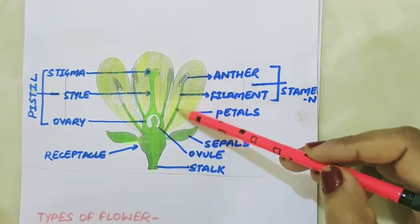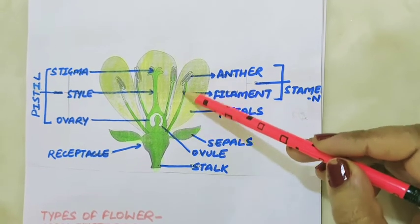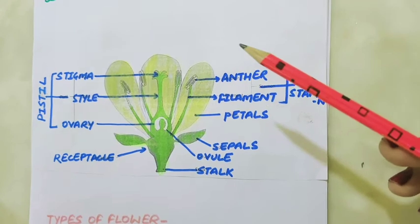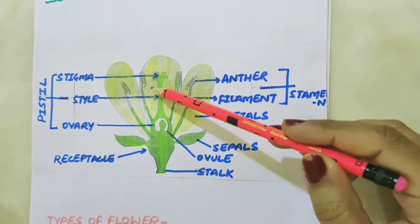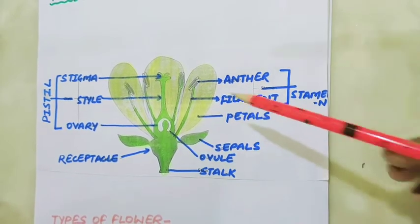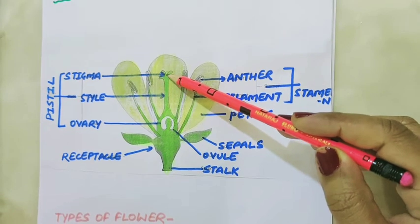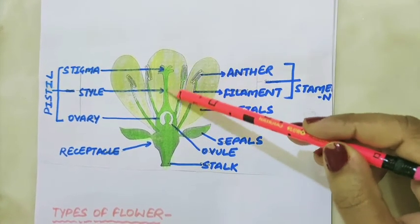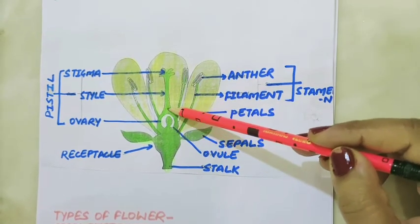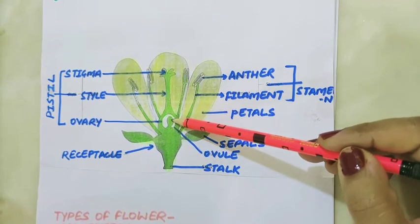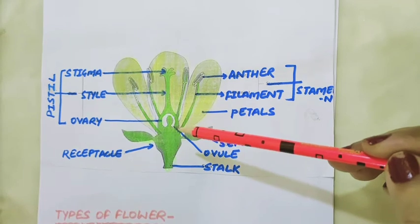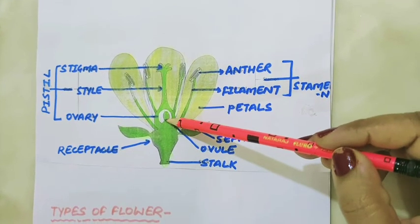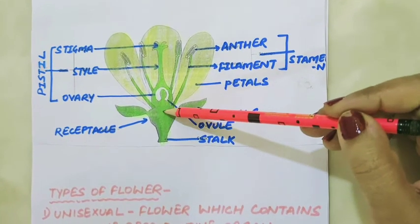Stamen is the male reproductive part of the plant, made up of two parts: the filament and the anther. The stalk of the stamen is called the filament, and the swollen top of the stamen is called the anther. Pistil is the female reproductive part of the flower, lying at the center. The top part of the pistil is called the stigma, which receives pollen grains from the anther during pollination. The middle part is a tube-like structure called the style, connecting the stigma to the ovary. The swollen bottom part is called the ovary, which makes and stores ovules. These ovules contain the egg cell — the female gamete. The base of the flower on which all parts are attached is called the receptacle.